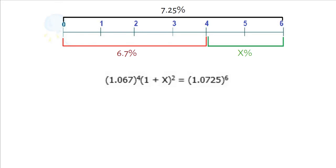And then we find (1.067)^4 × (1 + X)^2 = (1.0725)^6.